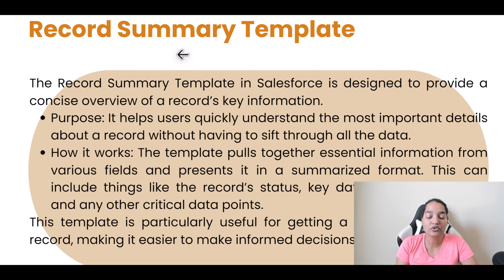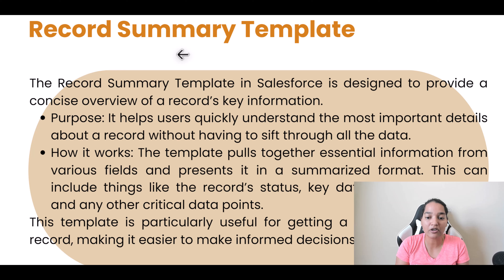What is the purpose? It helps users quickly understand the most important details about the record without having to sift through all the data. So instead of going through each and every field, there is going to be a place where you can get a quick summary of the whole record. The template pulls together essential information from various fields and presents it in a summarized format. This can include things like record status, key dates, important notes, and any other critical data points. It will save you a lot of time — you can just look at the summary and know what the record is all about, making it easier to make informed decisions or updates.